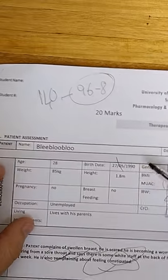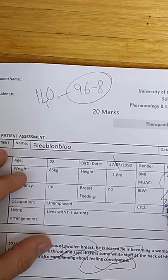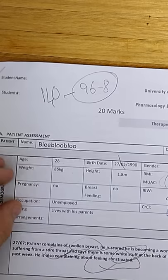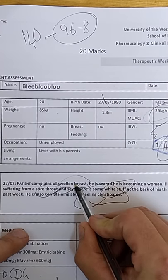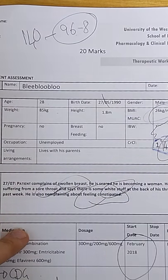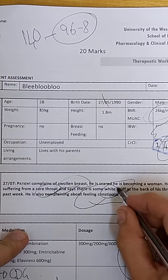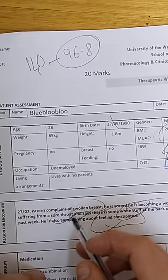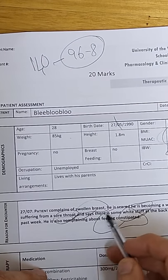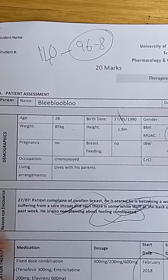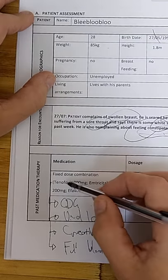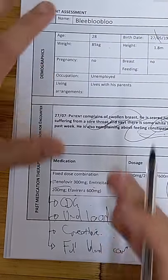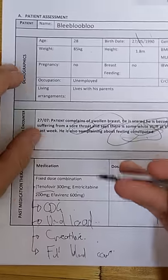Okay, but now let's look at everything holistically. So 28 years old, 85 kilograms. BMI 26 is actually a kind of good weight. He's complaining of swollen breasts. So that is gynecomastia. Well, not yet, but the diagnosis is gynecomastia. Suffering from sore throat. Says there's some white stuff at the back of his throat. So already you must have alarms going off. And he's also complaining about feeling constipated. And this was another trap I made for you guys.